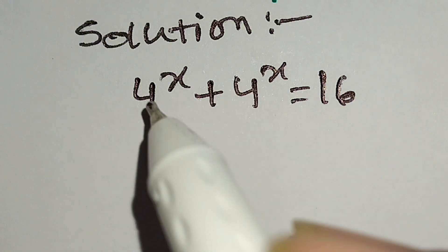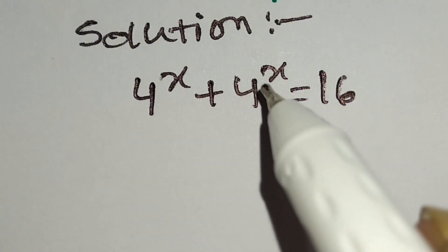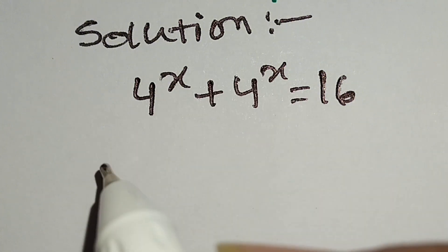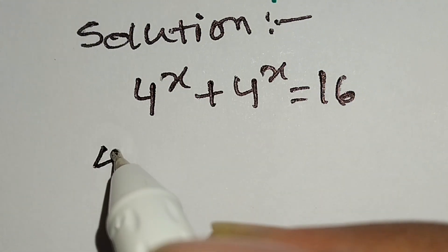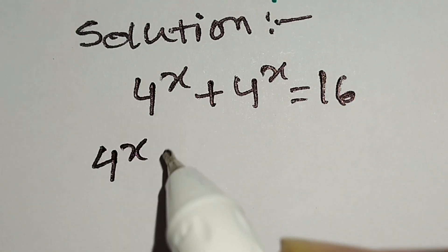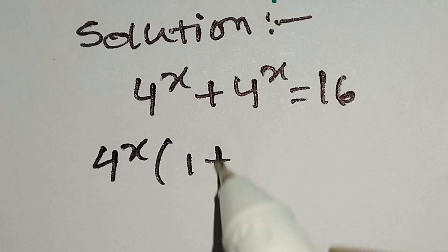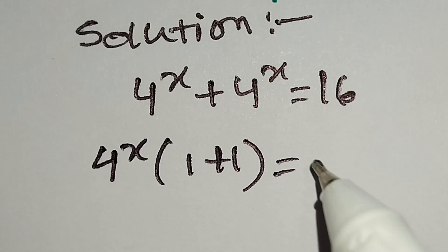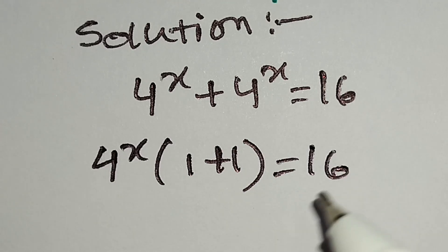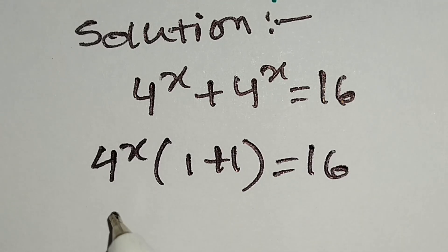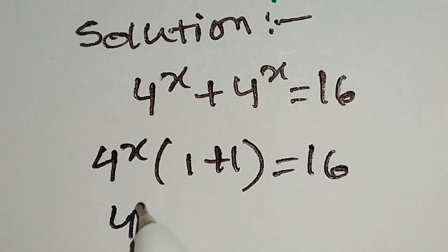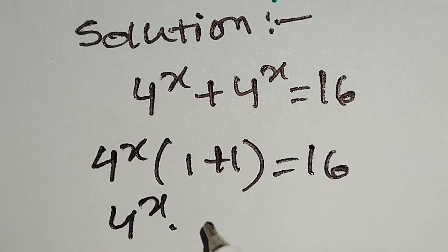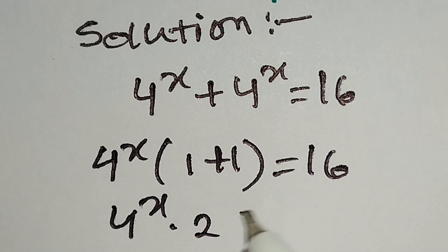We can take 4 to the power x as a common factor, so we can write 4 to the power x times 1 plus 1 is equal to 16. Here, 4 to the power x times 2 is equal to 16.